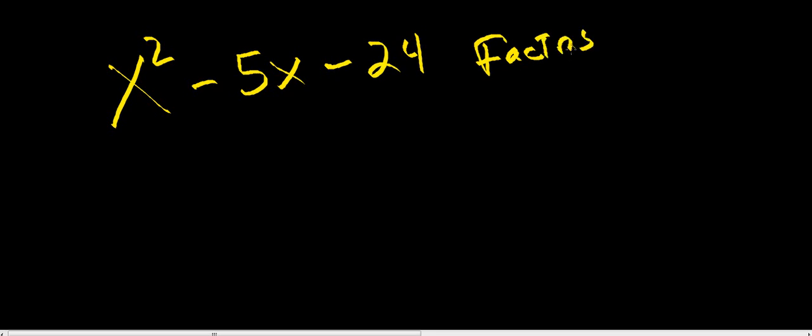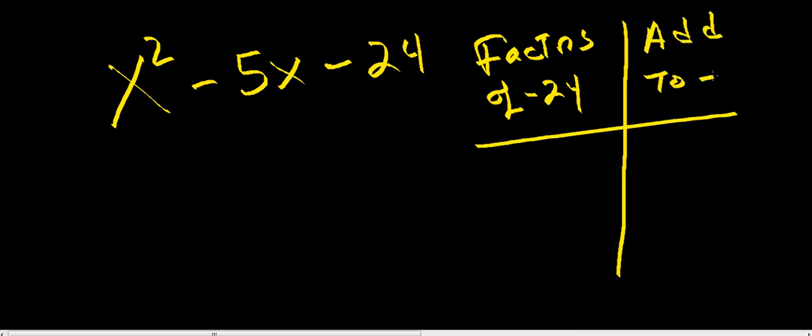Let's do another example. What if we had x squared minus 5x minus 24? Notice that now it's got a negative, so the sign of B is going to tell us which factor is positive, which one is negative. The factor with the greatest absolute value this time is going to be our negative factor. But we're just going to set it up like we did before. Factors of negative 24. What do we want them to add to? Sum to negative 5.